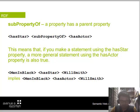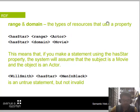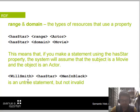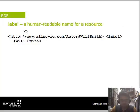If you make a statement using the 'hasStars' property, a more general statement using 'hasActor' is also true — so 'Man in Black hasStars Will Smith' implies 'Man in Black hasActor Will Smith'. Domain and range define the types of resources that use a property: 'hasStars' has range Actor and domain Movie — so the system assumes the subject is a Movie and the object is an Actor.